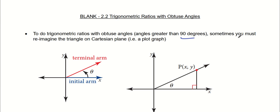And sometimes you're going to have to reimagine the triangle on our Cartesian plane, because when we're dealing with trigonometric ratios, we are essentially dealing with triangles. But except in this lesson, these triangles will be on a Cartesian plane, so like an x and y plot graph. And it always starts off here. This is the beginning point, the initial arm, and it rotates counterclockwise. This is the terminal arm. And you can make a triangle based on that.